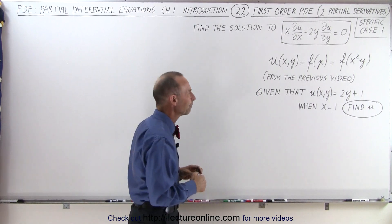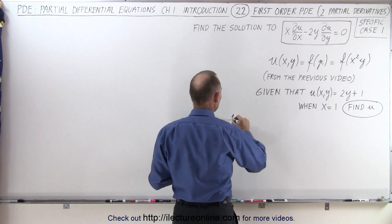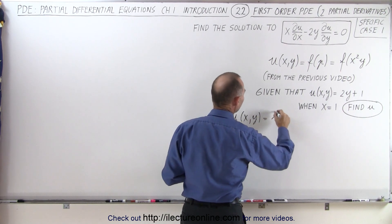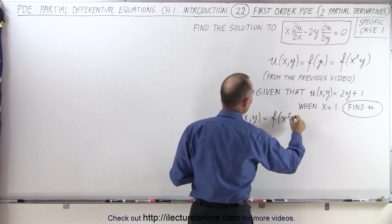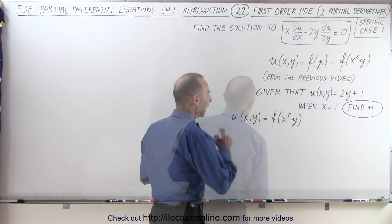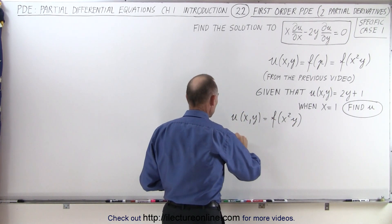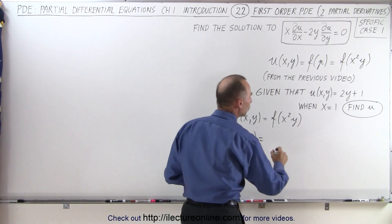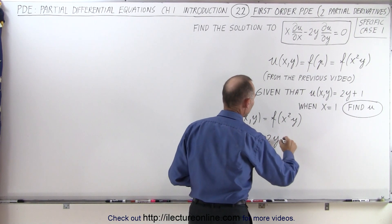So how do we do that? Well, we can say that u of xy is equal to a function of x squared y. And we also know that u when x is equal to 1 is equal to 2y plus 1.